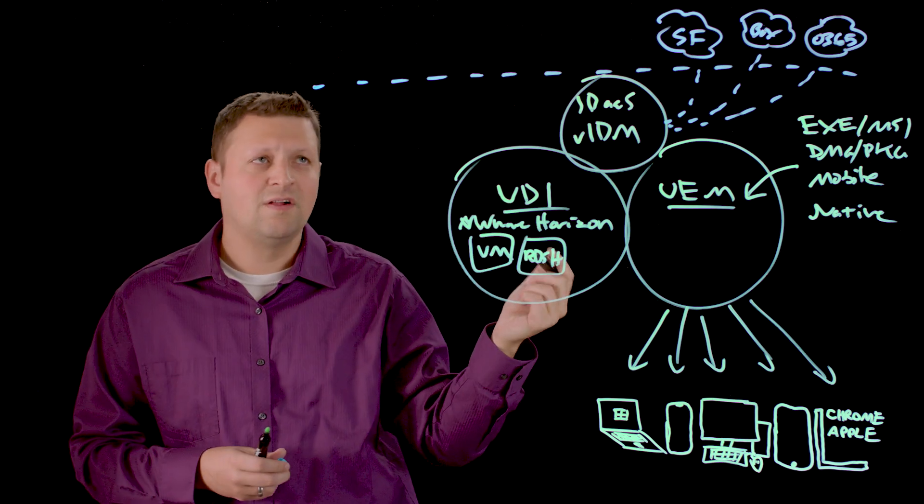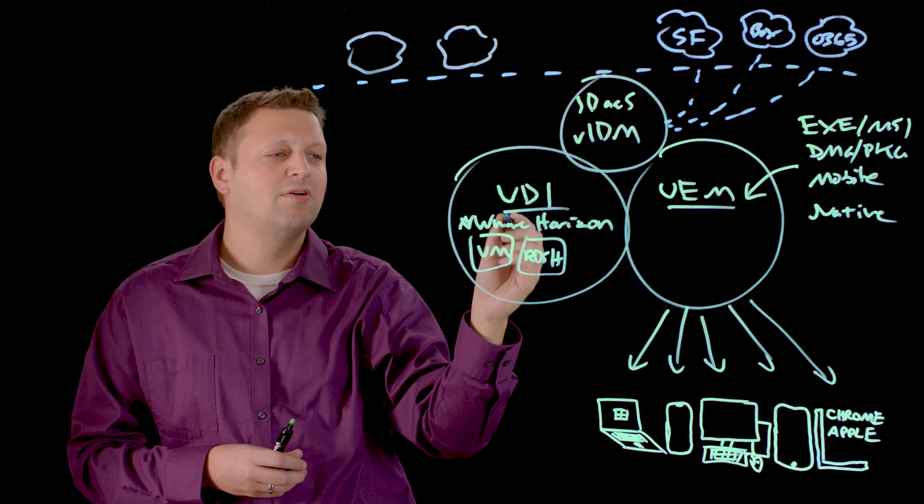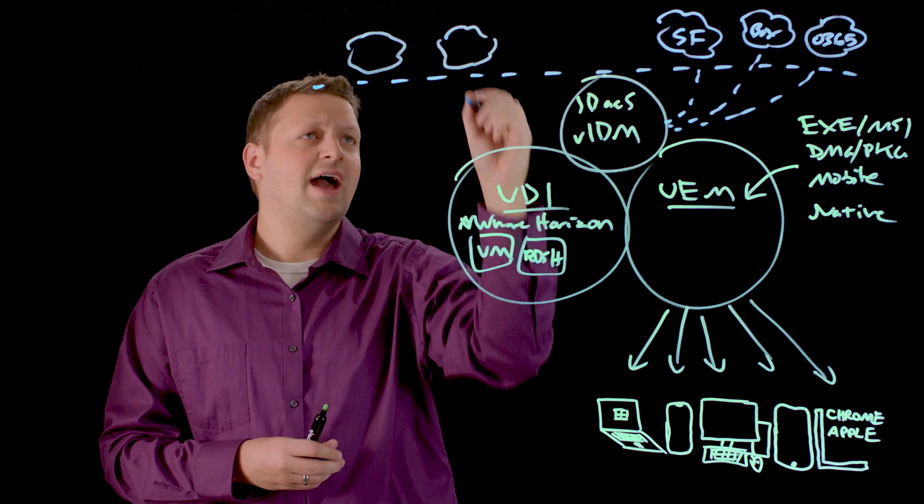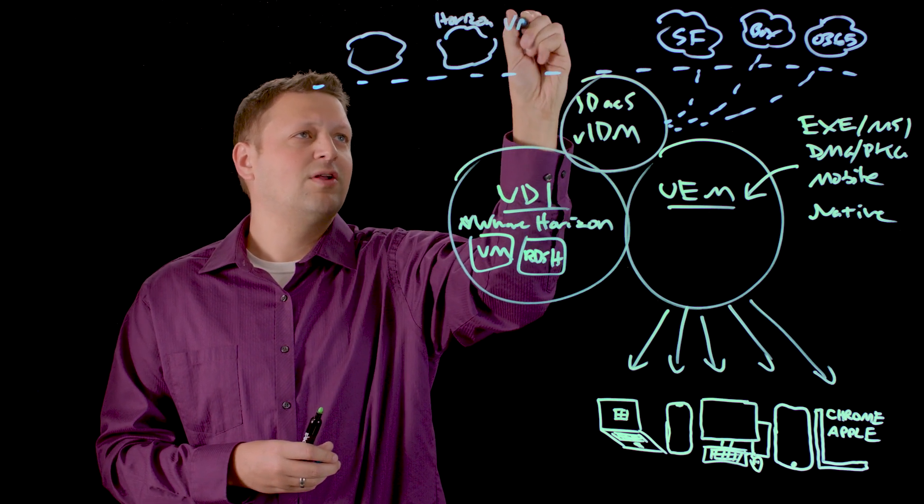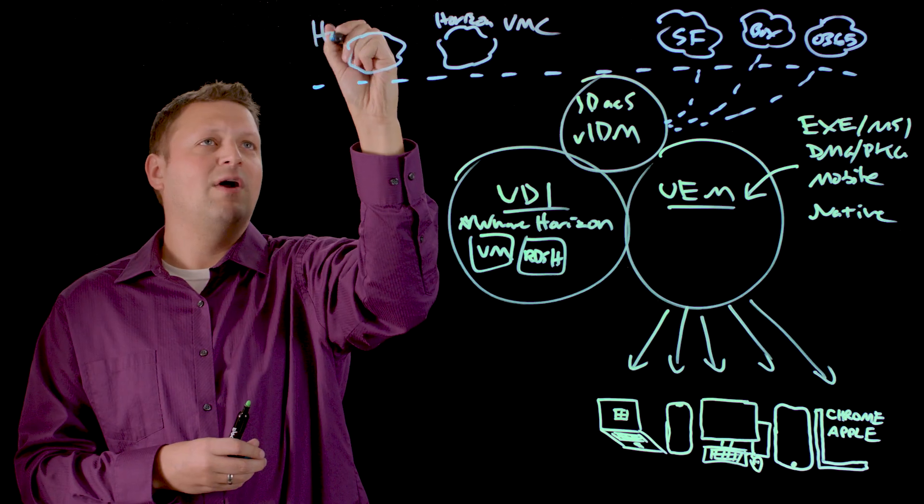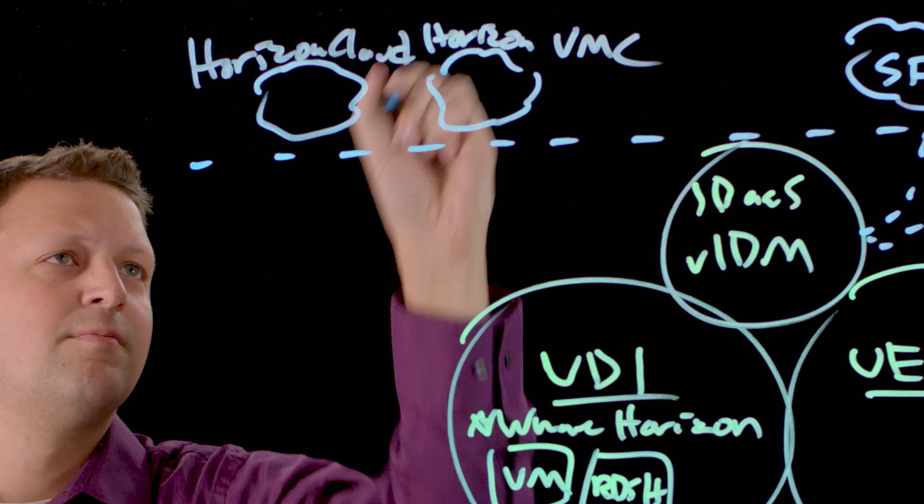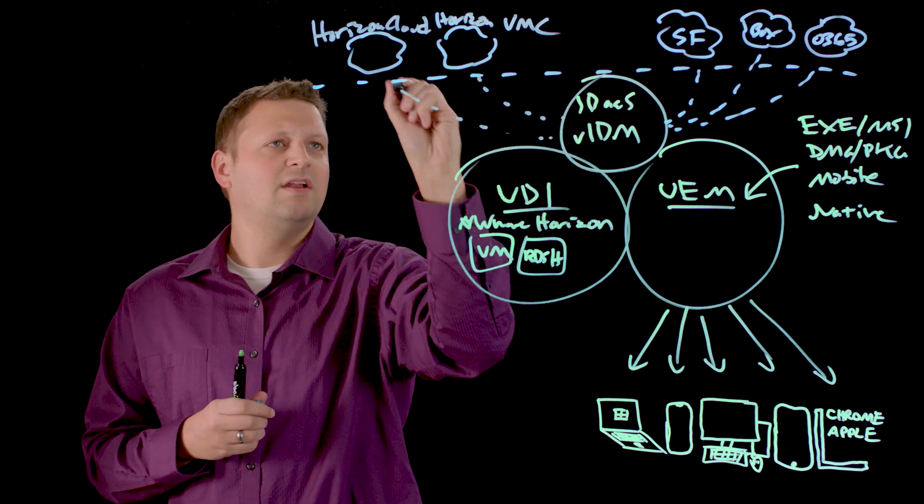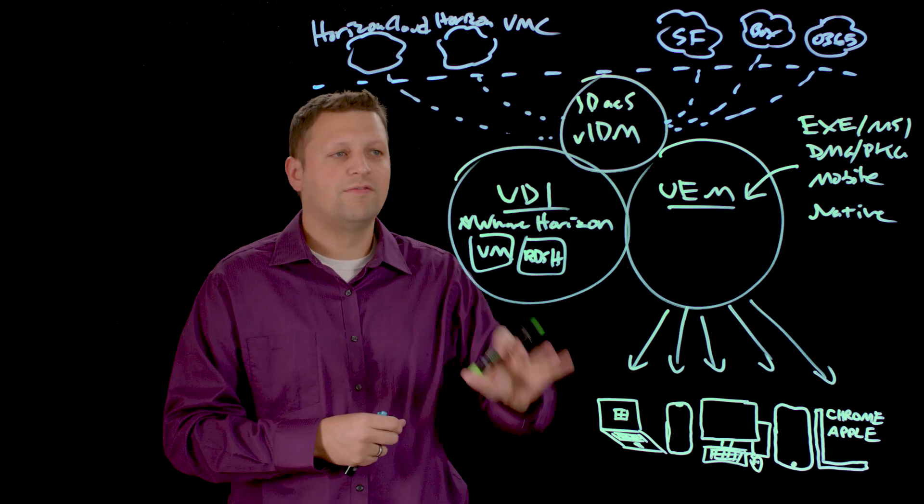As we look at expanding cloud solutions, there are a number of different ways that we can additionally provide virtual desktops and applications in the cloud. A big couple of those are Horizon on VMware Cloud on AWS and Horizon Cloud. These applications as well are tied into VMware Identity Manager which can tie all of the identity together for all the solutions.